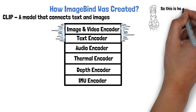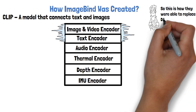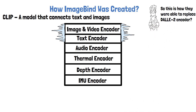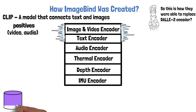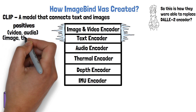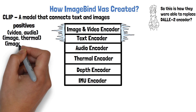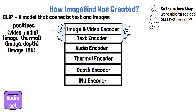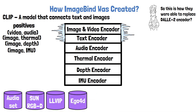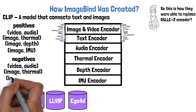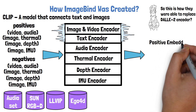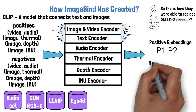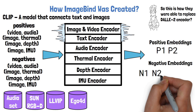This decision is likely what enabled replacing the text encoder in DALL-E 2 to generate images from audio. To train the other encoders, they take pairs of naturally matching samples — like audio and video from the AudioSet dataset — and they were also able to extract samples of images with matching thermal, depth, and IMU data from existing datasets such as SunRGBD, LLVIP, and EGO4D. Additionally, they created non-matching or negative pairs. They take a batch that includes matching and non-matching samples and run the model on them to get encodings for each of the inputs in each pair.